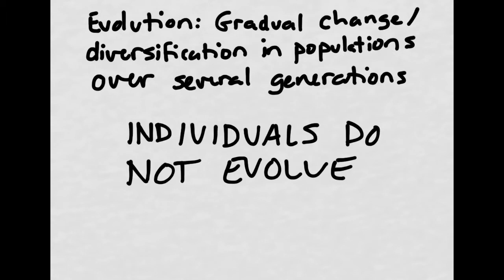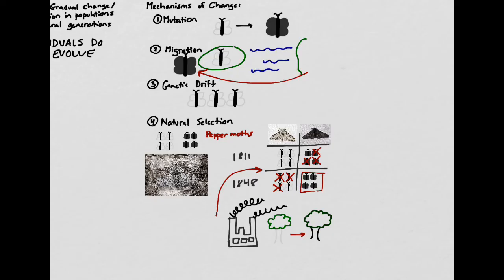So let's go back to this idea of evolution for a minute. Remember that this is gradual change in a population, not change in individuals. And it's going to work by virtue of these four different mechanisms: mutation, migration, genetic drift, and natural selection.